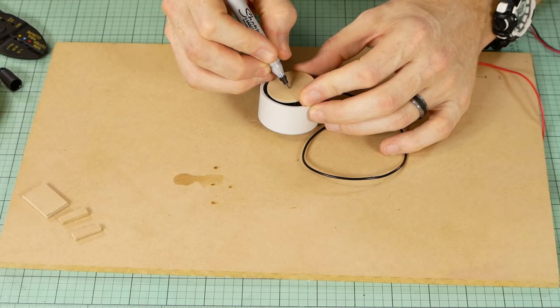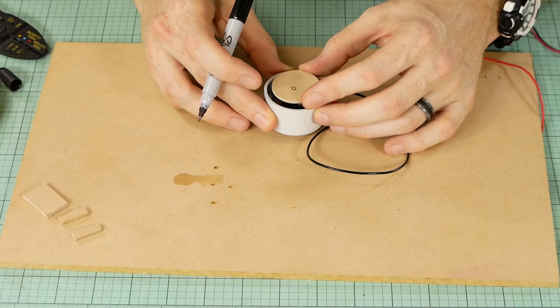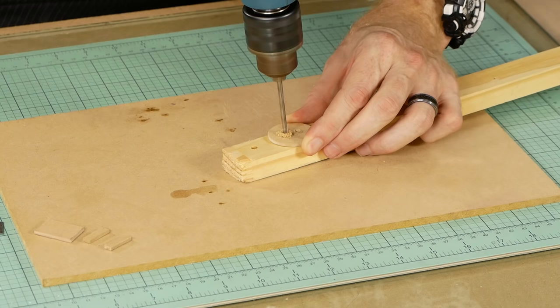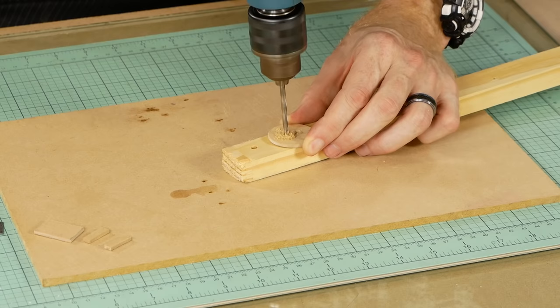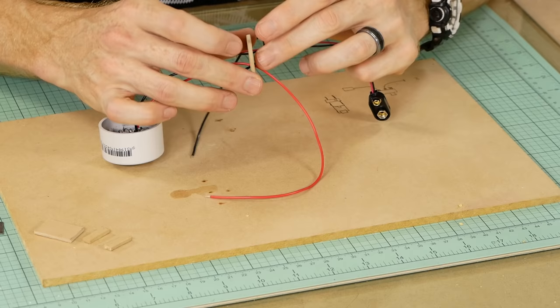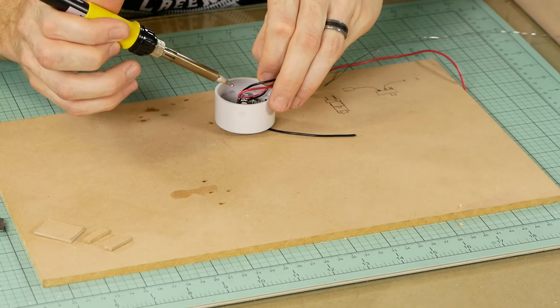Roughly mark where the wires need to come out from the lid and where the battery wires will also come through the lid and drill out the holes. The battery wires get soldered on after threading them through the 3mm MDF because of the large battery connector on one end.